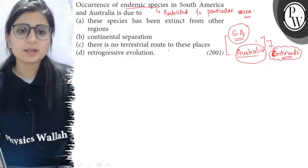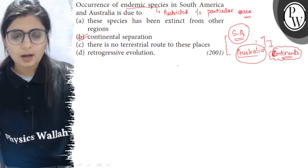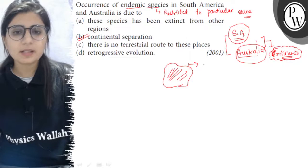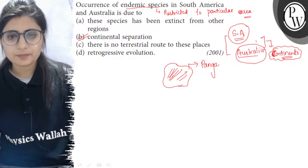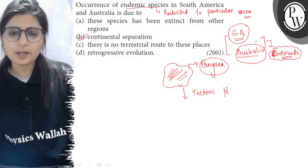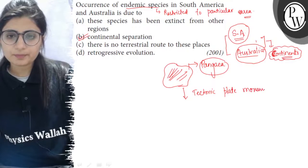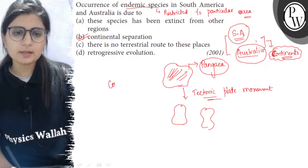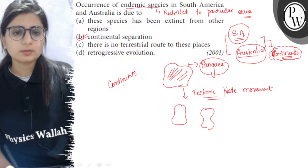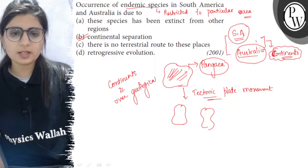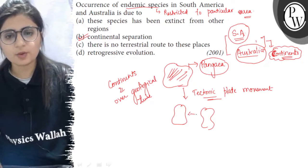The reason behind this endemism is continental separation. Earlier, Earth consisted of only a single mass of land known as Pangaea. Due to movement in the tectonic plates of Earth, this Pangaea divided into several continents — this is known as continental drift, meaning the movement of continents with respect to each other over geological time. With the passage of time, these continents have drifted apart from each other.